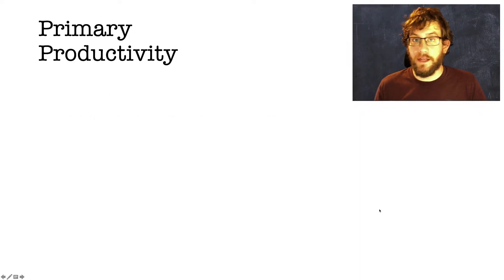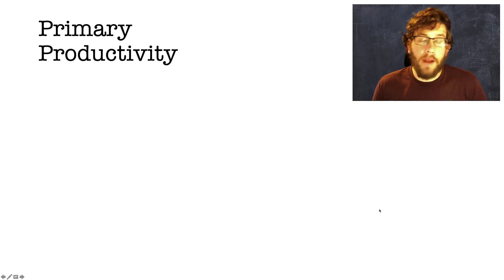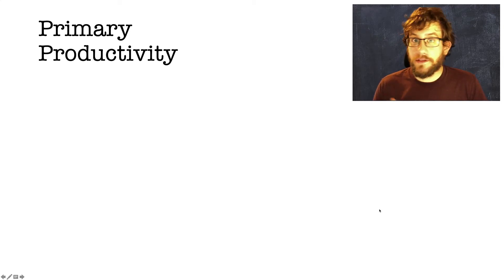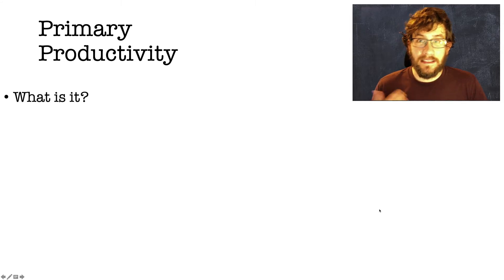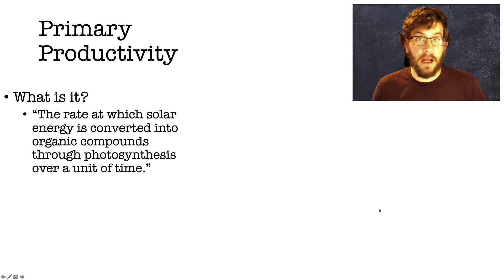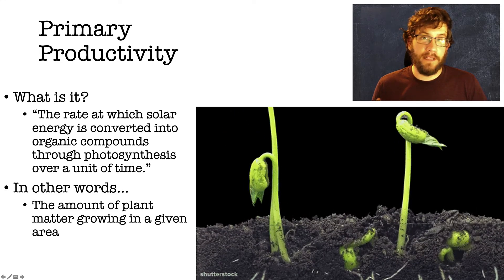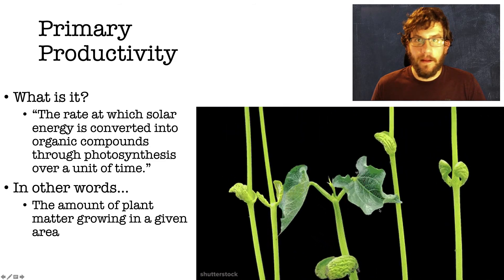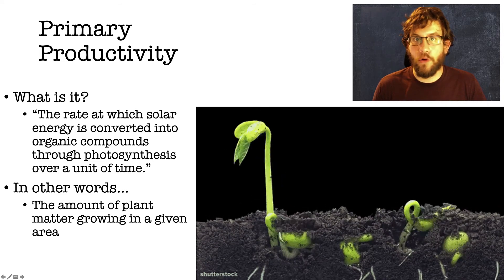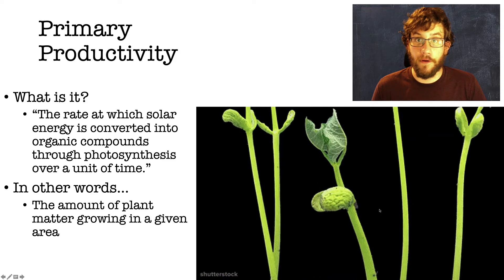Let's start by talking about productivity. We're looking at what's called primary productivity. When we talk about primary productivity, we're talking about plants. Plants are king — plants are the measurement of how much life there is in a biome. Without plants, there is no in-between for getting the energy from the sun into your body. The official definition from College Board: the rate at which solar energy is converted into organic compounds through photosynthesis over a unit of time. In other words, the amount of plant matter growing in a particular area over some unit of time.